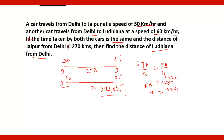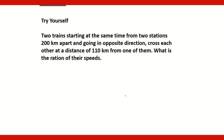Friends, here is a question for you to try yourself. Pause the video, note down the question, and give the answer with the method in the comments. Two trains starting at the same time from two stations 200 km apart and going in opposite directions cross each other at a distance of 110 km from one of them. What is the ratio of their speeds?